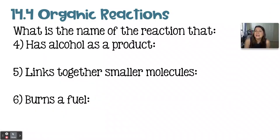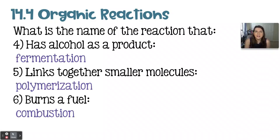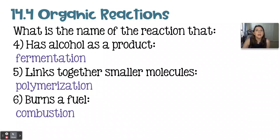For the final set: which reaction has alcohol as a product, which links small molecules into larger molecules, and which burns a fuel? Fermentation is the reaction that has alcohol as a product — it also has carbon dioxide as a product, which is what makes the little air bubbles in bread. Polymerization links together monomers to make a very large polymer, which can be used for making proteins, starches, and also plastics. Finally, a combustion reaction burns some type of carbon fuel in the presence of oxygen, and the products are always carbon dioxide and water.